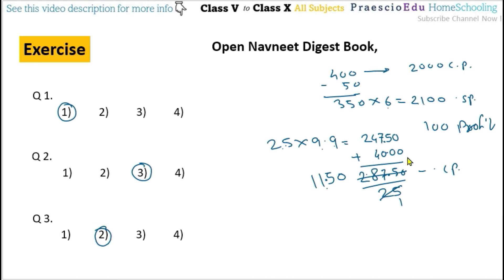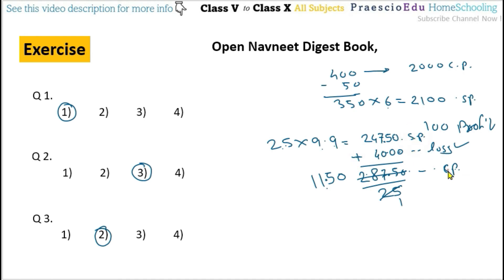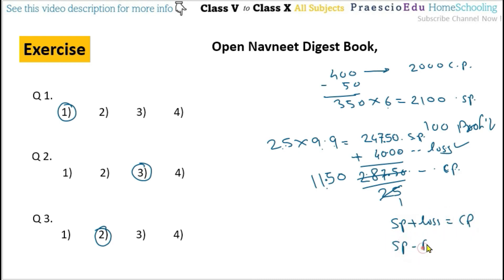Here is the main fundamental. When there is a loss, we add the selling price and loss together to get the CP, because CP is more than SP — that is why there is a loss. So SP plus loss equals CP. And when there is profit, SP minus profit equals CP. Please understand this formula.